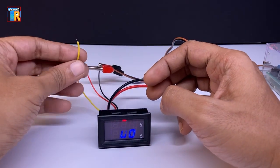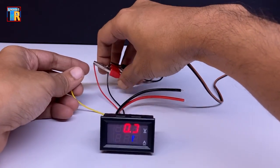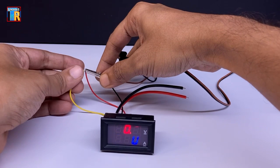Now attach the yellow wire which is the voltage input wire to the positive voltage source. The meter will display the voltage.